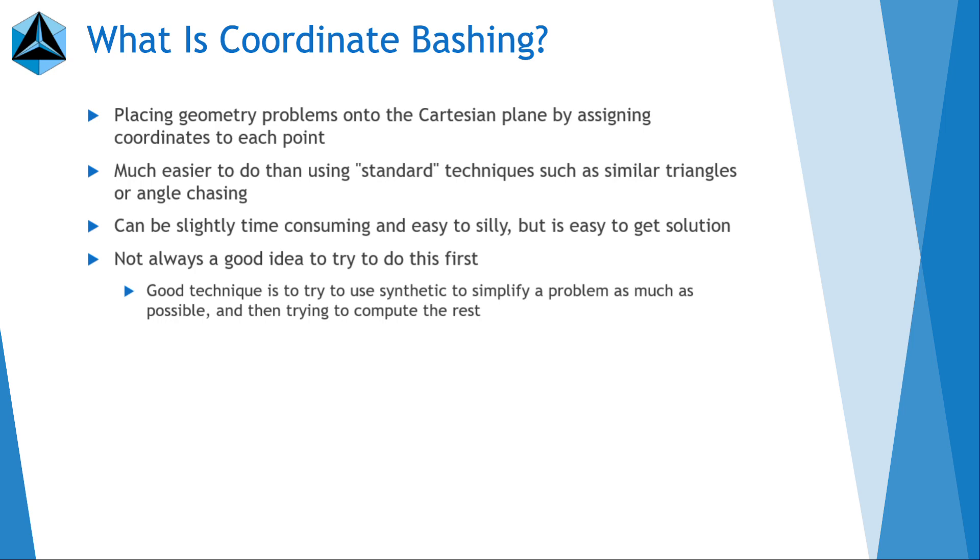Like for example, on the 2021 AIME 1 problem 2, what some people did was they just directly went to coordinate bashing and they ended up spending 20 minutes solving extremely complicated quadratics when you could have just applied similar triangles and it was like two linear equations.